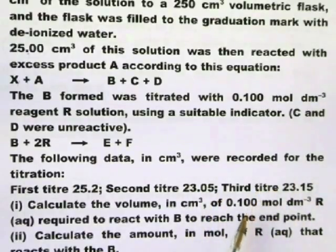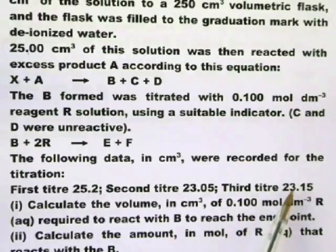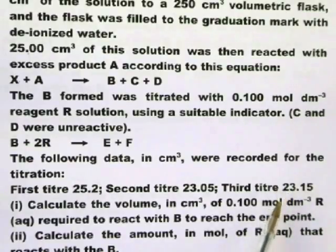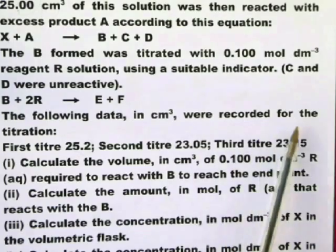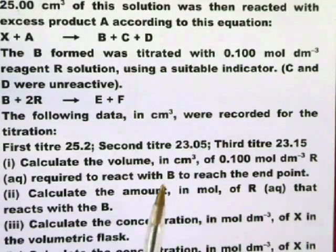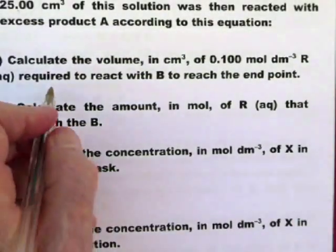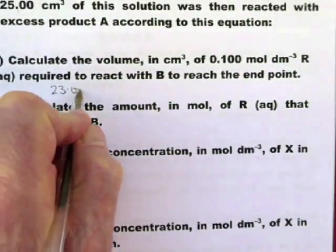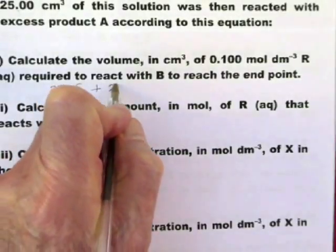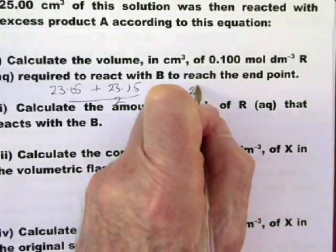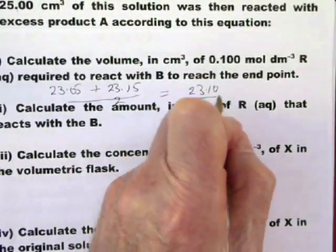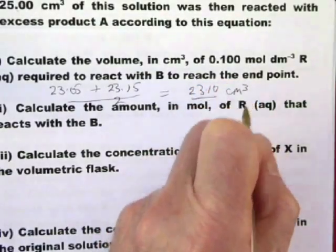If the two are not within 0.1 of a centimeter cubed, then you do a third reading, an extra titre, a fourth titre, in order to find two which are within 0.1 of a centimeter cubed. And then you average them. So all we have to do in this case is average these two to get the answer to the first question. 23.05 plus 23.15 divided by 2 equals 23.10 centimeters cubed.